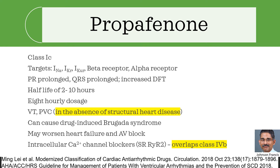Propafenone is a Class 1C drug. It targets the sodium current, rapid and ultra-rapid components of potassium currents, beta receptors and alpha receptors. It can prolong the PR interval and QRS duration, as well as increase the defibrillation threshold. The drug has a half-life of 2 to 10 hours, requiring 8-hourly dosage. In the absence of structural heart disease, propafenone can be used for treatment of ventricular tachycardia and premature complexes. Like Flecainide, it can cause drug-induced Brugada syndrome, worsening heart failure, and AV block. It also blocks the intracellular calcium channel — the sarcoplasmic ryanodine receptor.